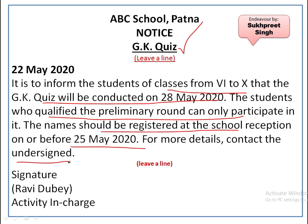This notice answers all the questions. What? GK Quiz. When? 28 May 2020. Who to contact? Ravi Dubey, the Activity In-Charge. Where to submit the details? School reception. When to submit? On or before 25 May 2020. Who can participate? Students who qualified the preliminary round. This is how a notice should be written. Don't just write a signature — rather, put the actual signatures, like Ravi Dubey.